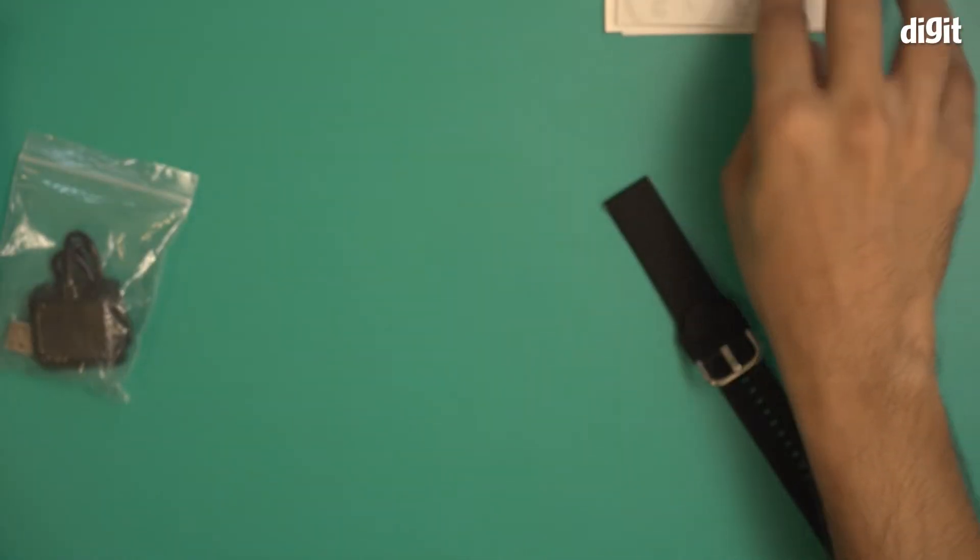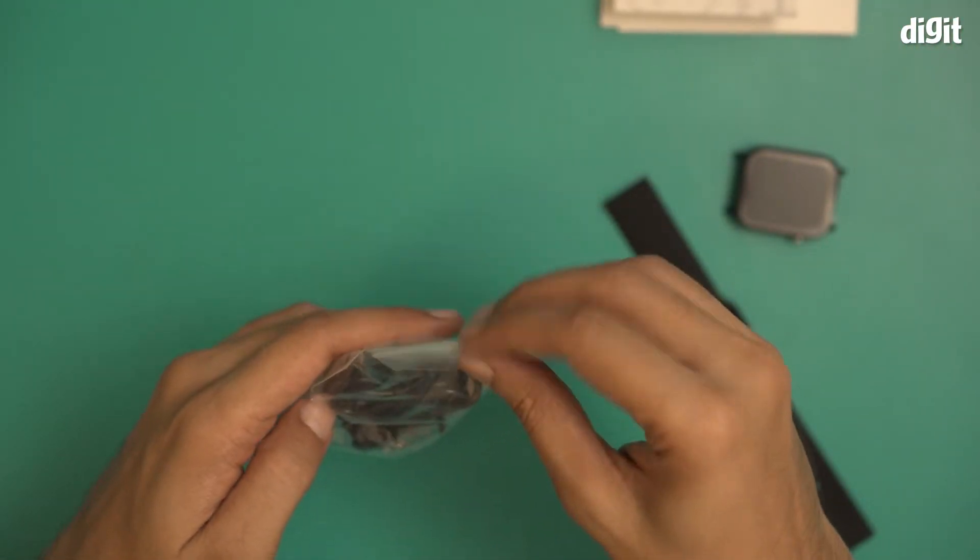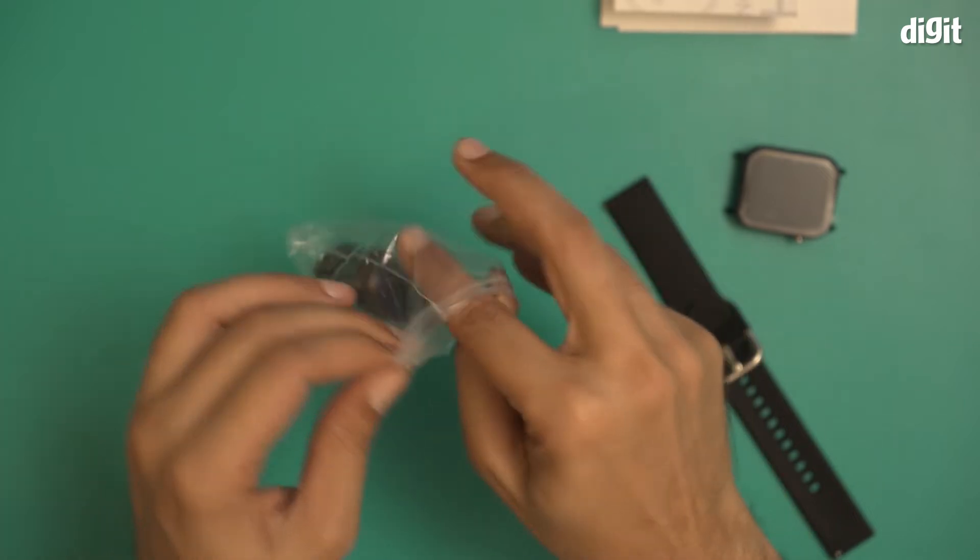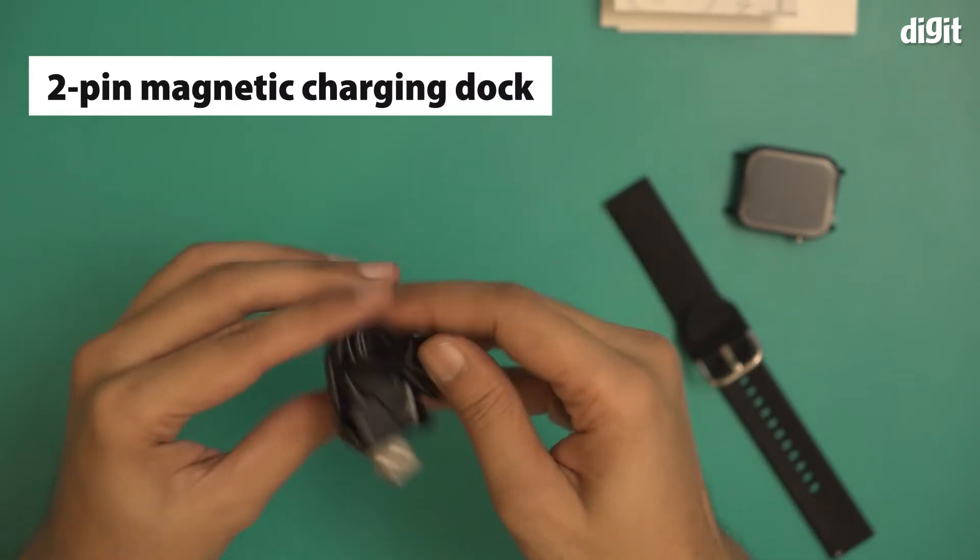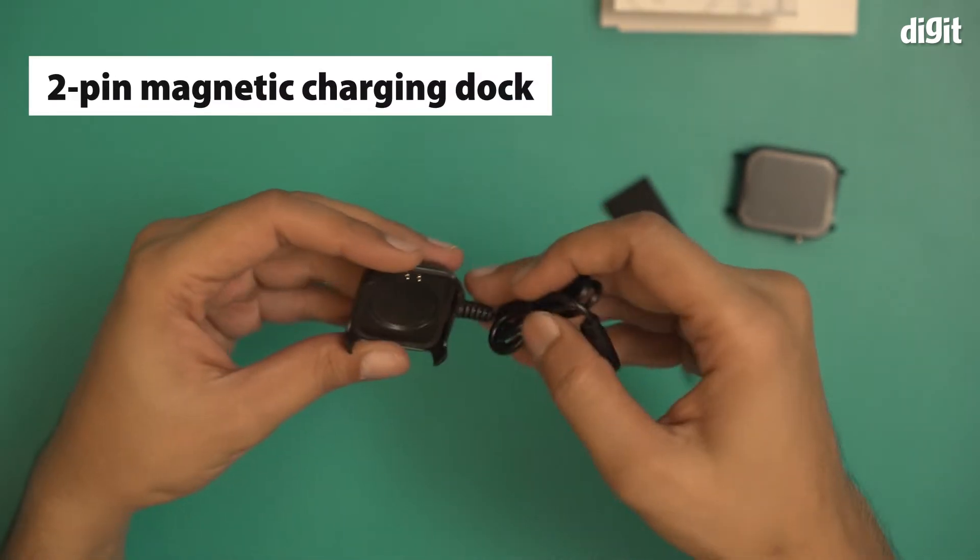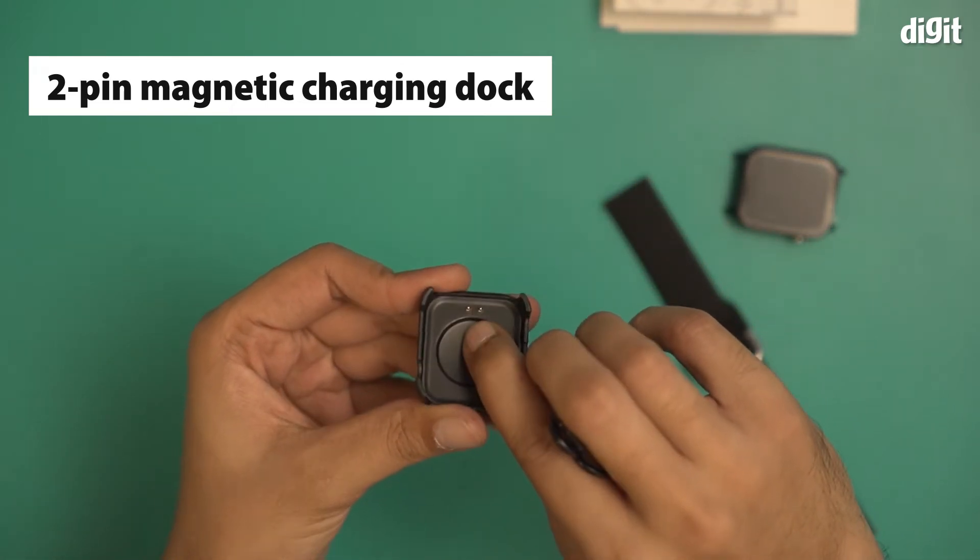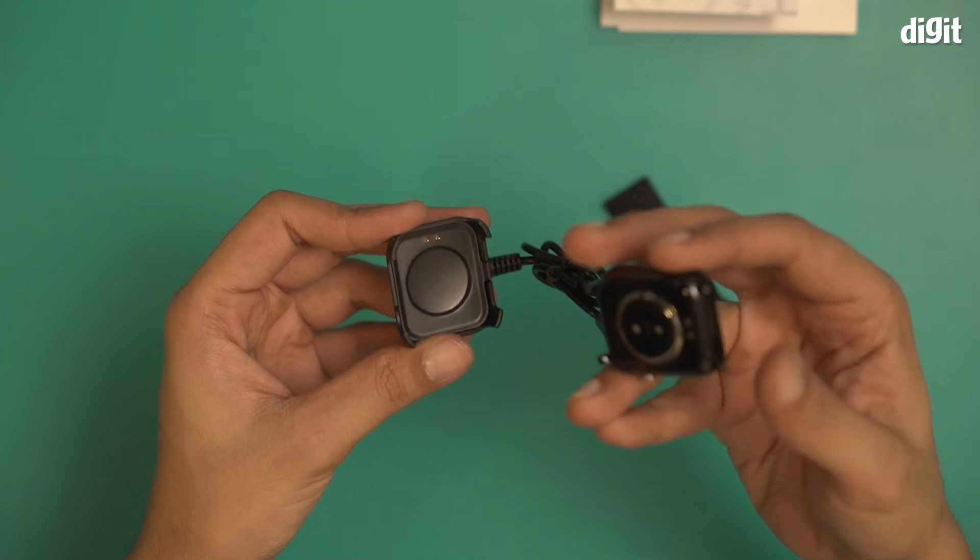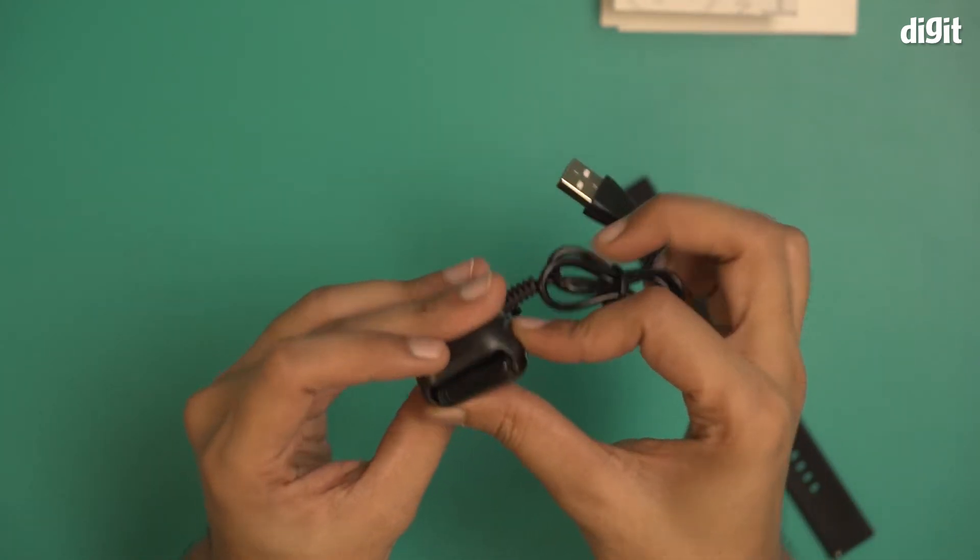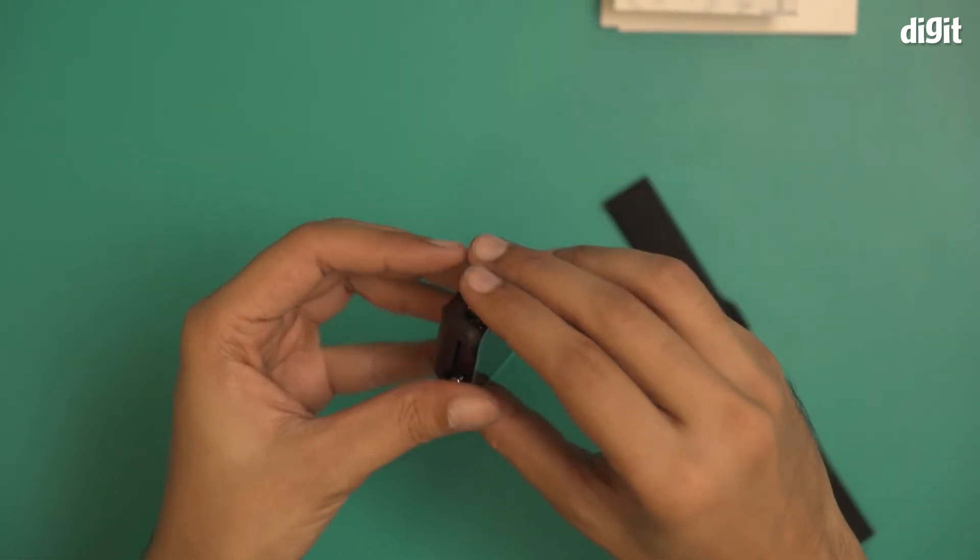In this packet we have the charging dock. So this is the charging dock, notice these magnetic charging pins over here. This is where you put the smartwatch when you want to charge it, so it will go in like so and you will be able to charge it.